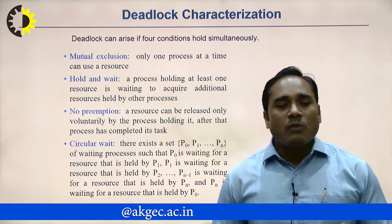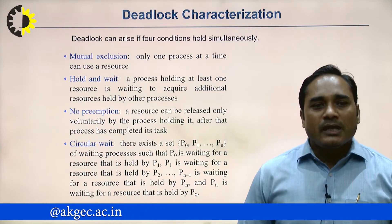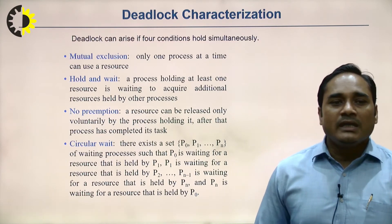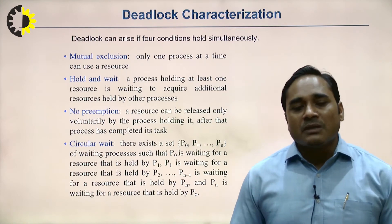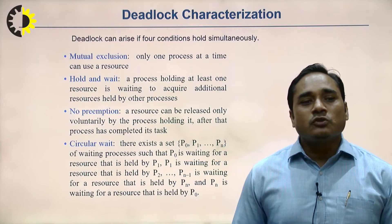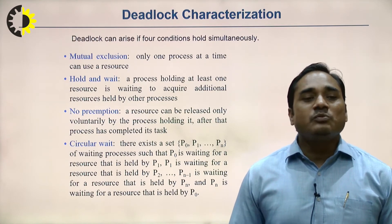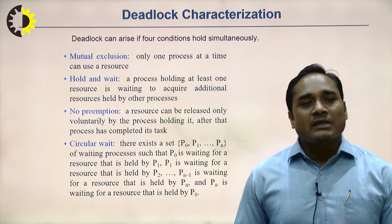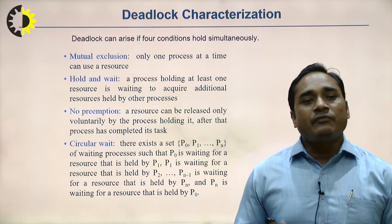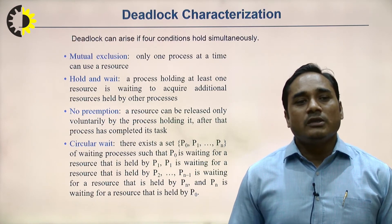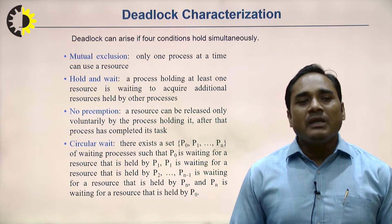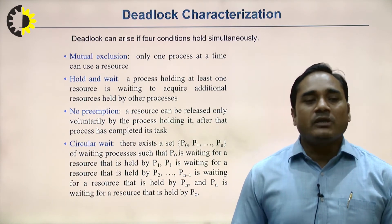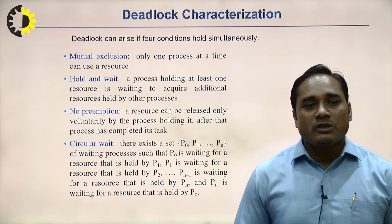The third condition is no preemption: a resource can be released only voluntarily by the process holding it, after that process has completely finished its task. If a process is using a resource, that resource cannot be preempted until the process completes its work, after which it releases the resource and the next process gets access.